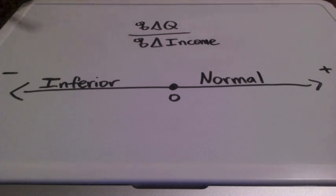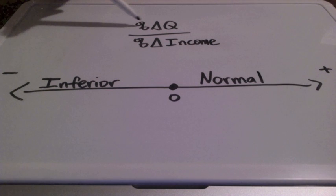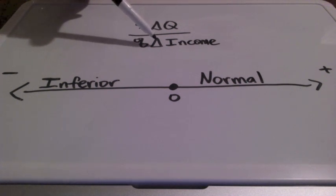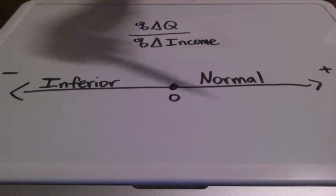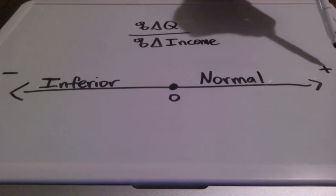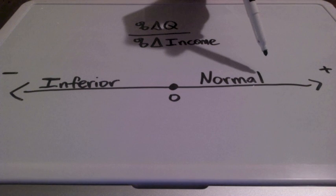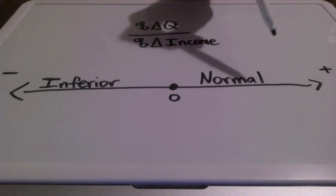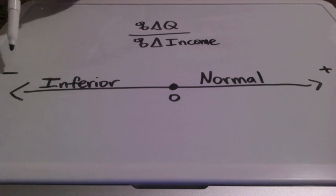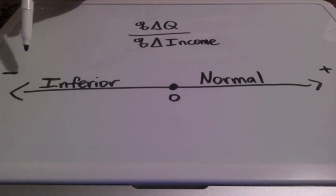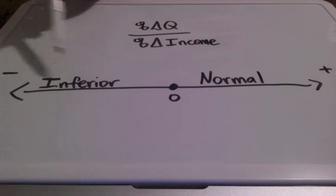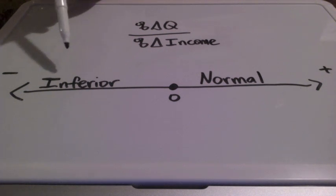Income elasticity of demand shows how sensitive the quantity of a product is to a change in income. We take the percent change in quantity divided by the percent change in income. A positive income elasticity coefficient means the product is a normal good — if income increases, people will buy more. A negative income elasticity coefficient means the product is an inferior good — if income increases, people will buy less of that particular good.